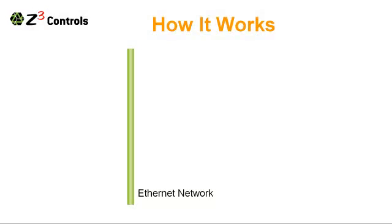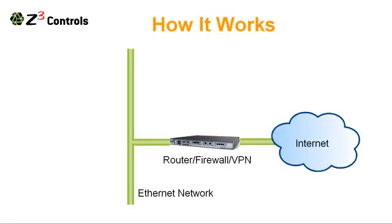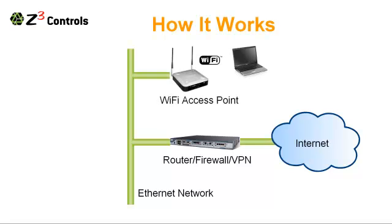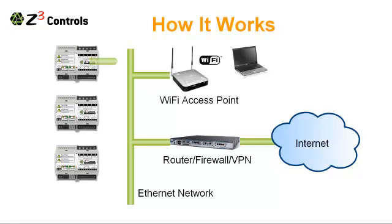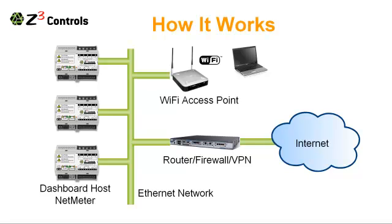Here's how it works. This is your typical corporate network. It is connected to the Internet through a router. Wireless access points provide access to your mobile Wi-Fi devices. NetMeters are also added to your network and connected through Ethernet. Now, one of the NetMeters is going to be designated as the dashboard host, because it is going to act as the host server to deliver the consolidated dashboard.